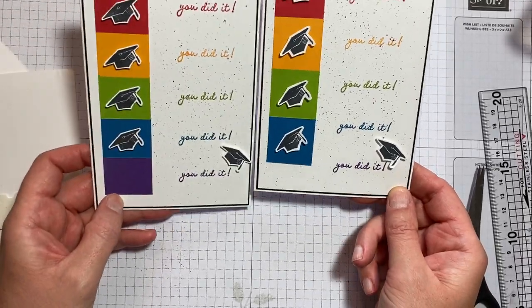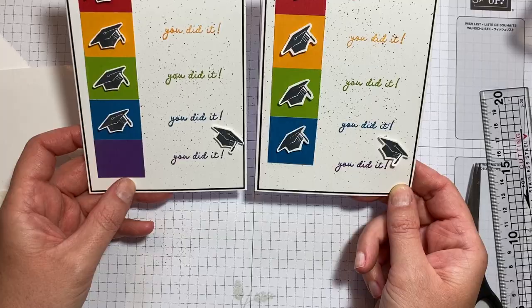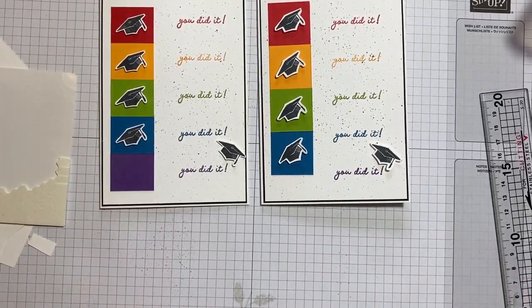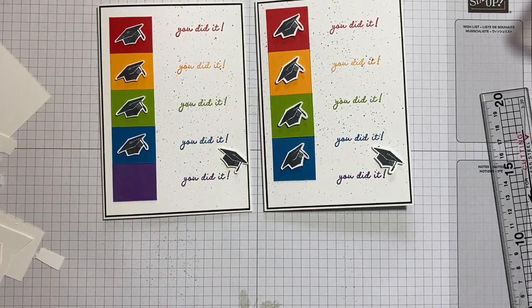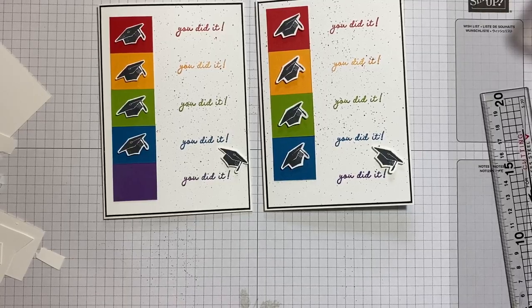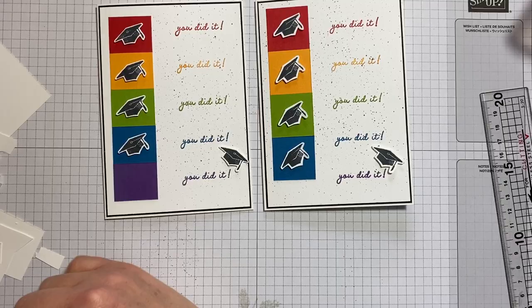Now obviously they look very slightly different, apologies for that, but I think they're both equally lovely. So that was the Round of Applause stamp set, really great for all different types of congratulations cards, really nice font and some lovely little images.